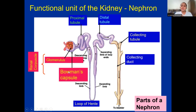Bowman's capsule plus the glomerulus is known as the renal corpuscle. This Bowman's capsule then leads as the proximal convoluted tubule, and then you have the distal convoluted tubule. In between the proximal and distal convoluted tubule, you have the loop of Henle, with its descending limb and ascending limb. The distal tubule leads to the collecting tubule, then to the collecting duct and to the bladder.